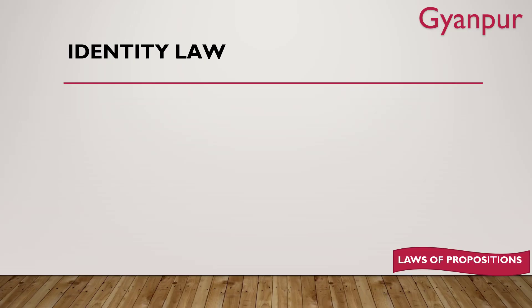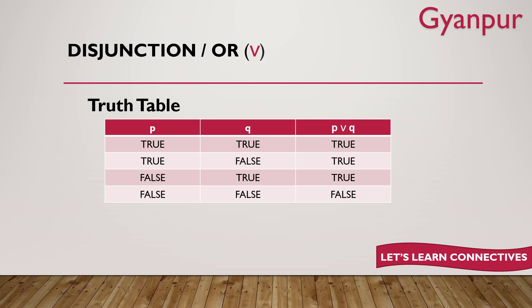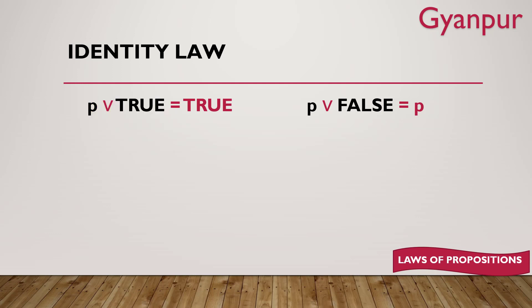First of all, we will talk about identity law. Now what is identity law? You have a statement, and a truth value — either true or false. So if you have a statement and you OR it with true — p OR true — you will always get the answer as true. Why? Because in a disjunction's truth table, if any one value is true, the final answer is true. So whether p is true or false, p OR true will always be true.